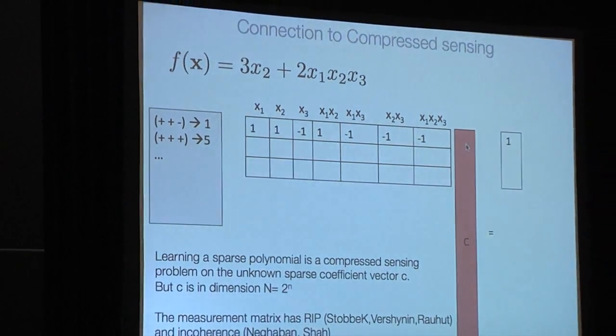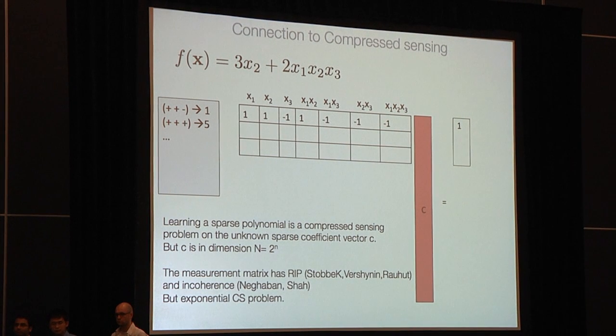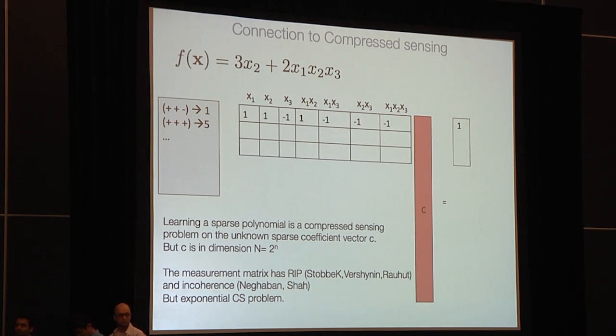A second question: it's known that compressed sensing is related to differential privacy lower bounds. Could constructions from differential privacy give lower bounds on this learning problem? The speaker responds that the compressed sensing here is highly non-standard because the unknown vector lives in exponential dimension, so standard methods fail. Whether differential privacy constructions give relevant lower bounds remains an open and interesting question.